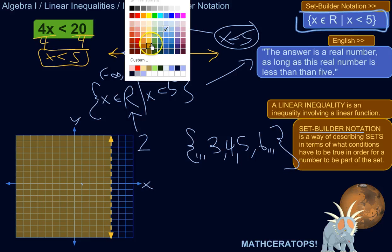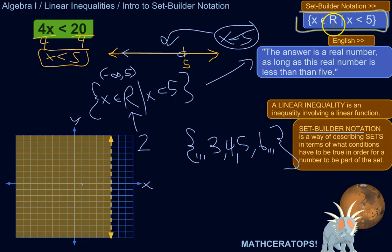So set builder notation is kind of a cool thing. I would encourage you to explore it and kind of learn the symbols, learn the different rules, learn what you can do. Because once you kind of learn set builder notation, you'll be able to understand some complex and interesting stuff. This is a very efficient way of describing sets of numbers. Just a little thing like that can describe all kinds of information. So there's the answer to a linear inequality, the solution set of a linear inequality expressed in set builder notation.